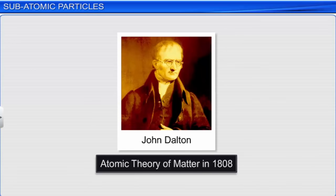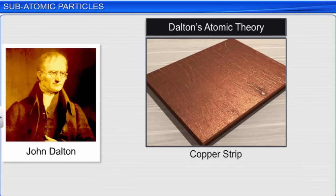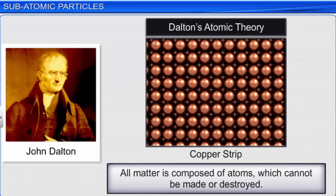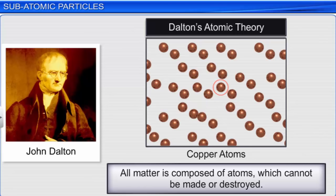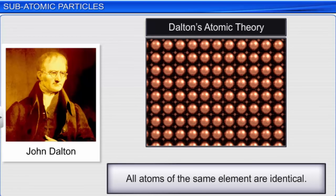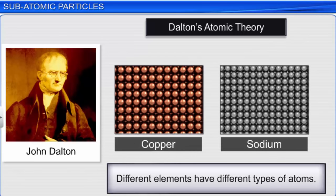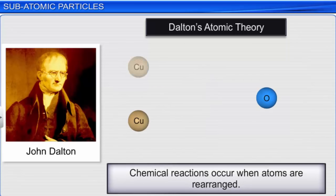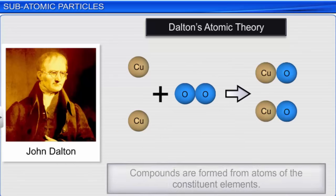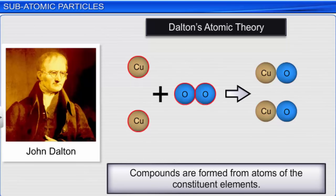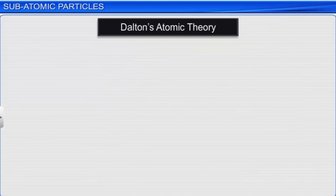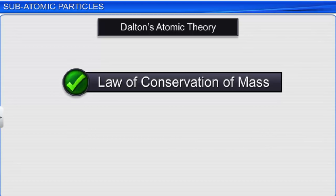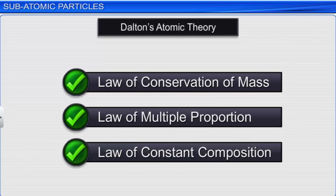Dalton proposed that the atom is the ultimate particle of matter. This theory is called Dalton's atomic theory. It postulates that all matter is composed of atoms that cannot be made or destroyed. All atoms of the same element are identical. Different elements have different types of atoms. Chemical reactions occur when atoms are rearranged. Compounds are formed from atoms of the constituent elements. Dalton's atomic theory was able to explain the laws of conservation of mass, multiple proportion, and constant composition.